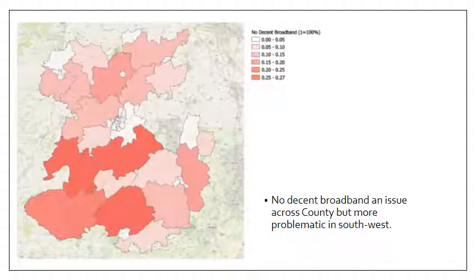So if we map that data — the same data used in the House of Commons library dashboard — onto the situation in Shropshire, you can see that a lack of decent broadband is an issue across the county, but it is more problematic in the southwest of the county, which as I mentioned earlier, is as much a factor of the topography and remoteness of some of those areas as anything else.